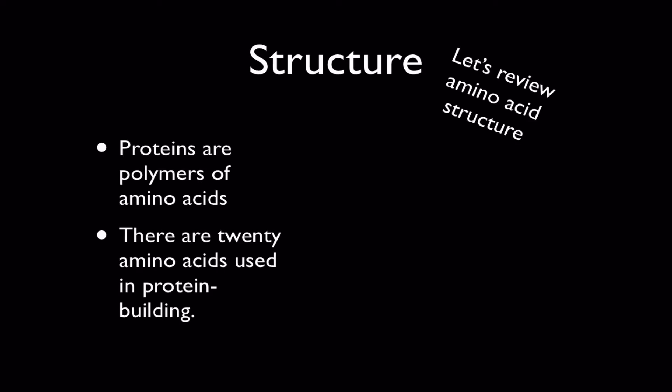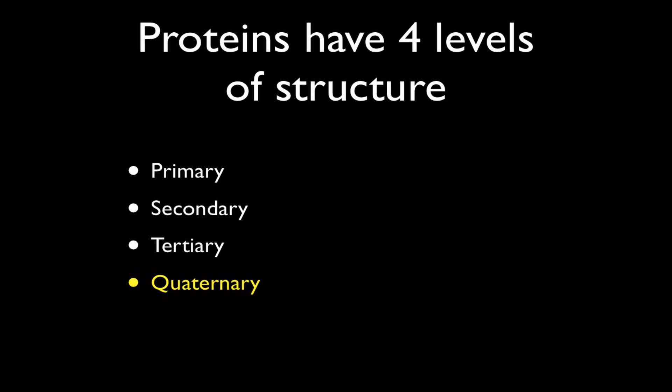Okay proteins have four levels of structure. The primary, secondary, tertiary and some proteins exhibit a fourth level of structure called the quaternary level. We're going to look at each one of these in detail.